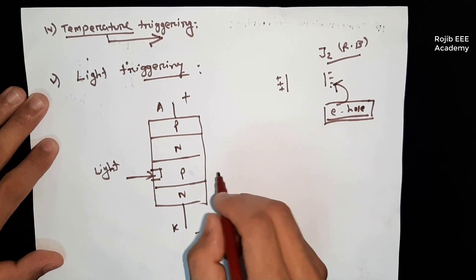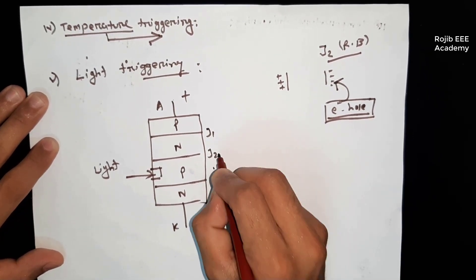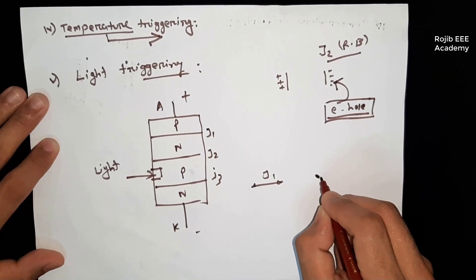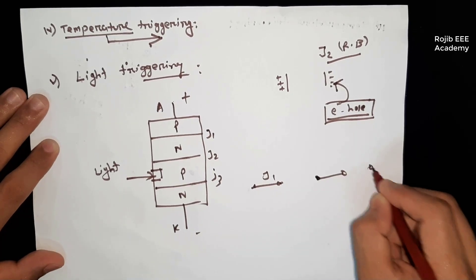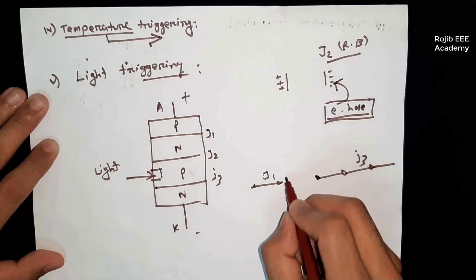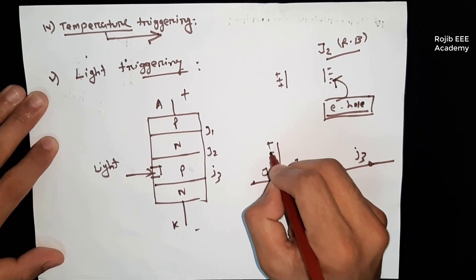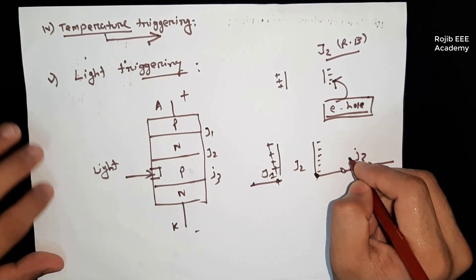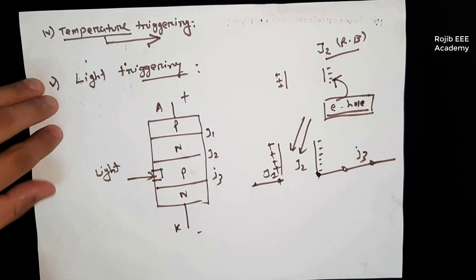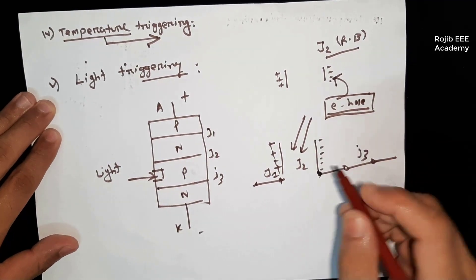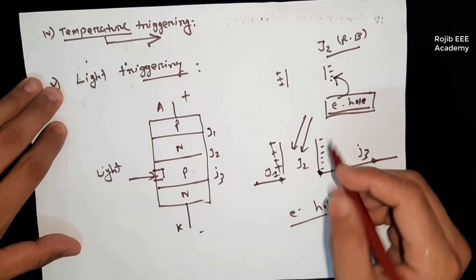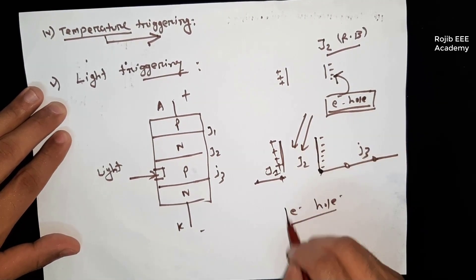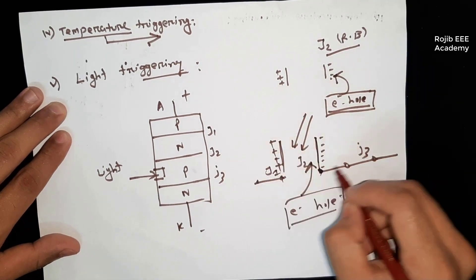The light turn-on method: the thyristor has junctions J1, J2, and J3. J2 is reverse biased. Junction J2 has positive charge and negative charge. Now we have a light supply. Light supply basically means light — light has photons. When the photon hits the junction, electrons and holes are generated. The electron-hole pairs are generated by the photon at the reverse-biased junction J2.